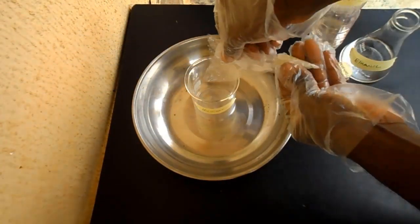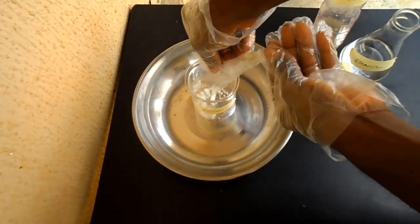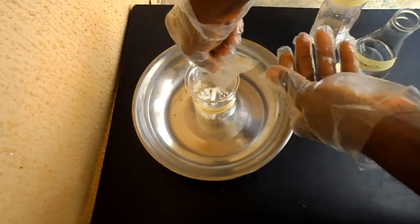Now measure a small quantity of ethanol and dissolve the menthol in it. Stir the mixture until all the menthol dissolves.